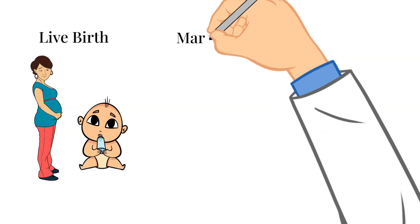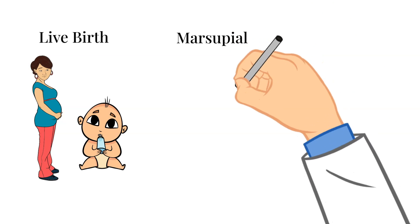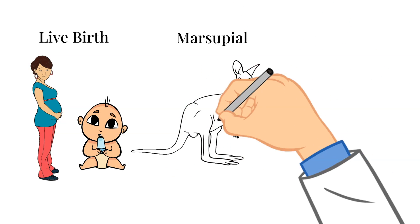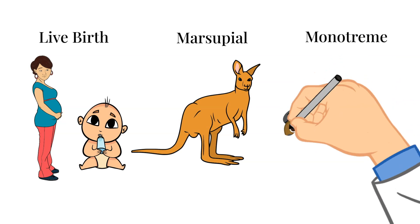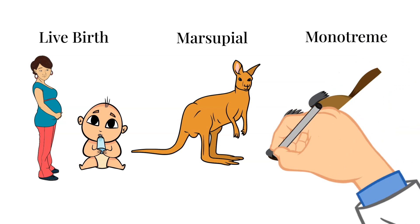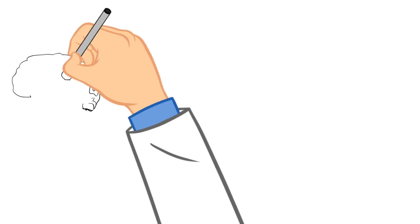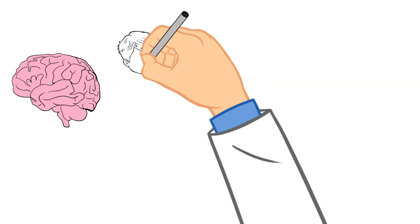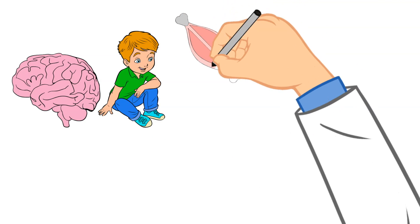Other mammals called marsupials carry their young in a pouch. An example of a marsupial is a kangaroo or a koala. There are also a few mammals that do lay eggs and these are called monotremes. An example of a monotreme is a platypus. So even though it lays eggs, it still is considered a mammal. Mammals are often considered to be very intelligent. They have a unique brain compared to the rest of the groups of vertebrates.